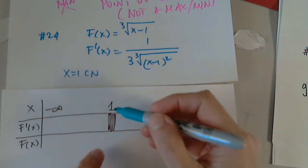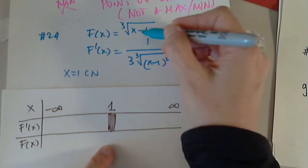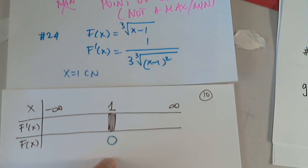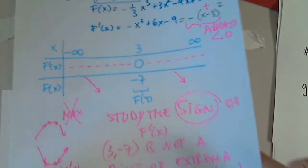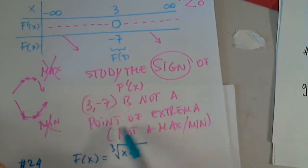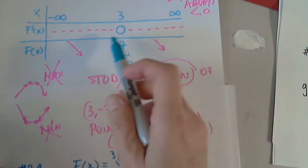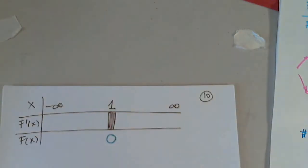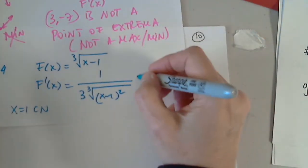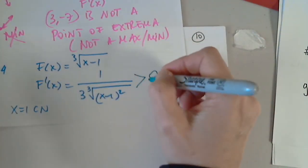Okay, so I have to plug in 1 in the function. 1 minus 1 is 0, the cube root of 0 is 0. The derivative doesn't change sign. Back to my function, I realize that this is a number that is always positive, always.